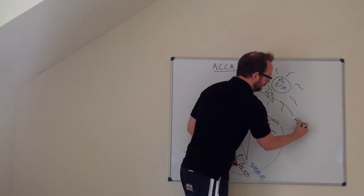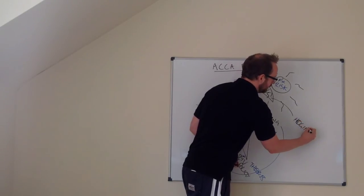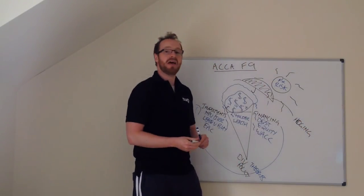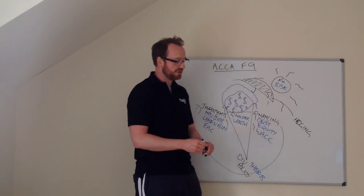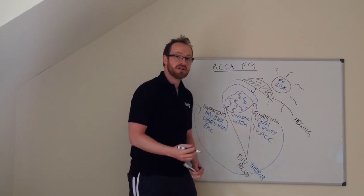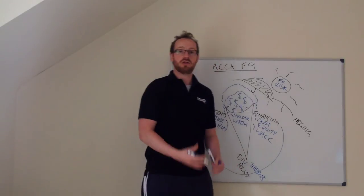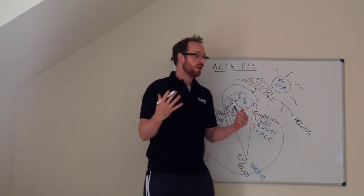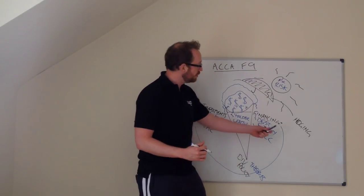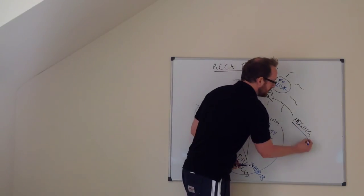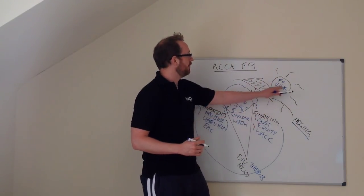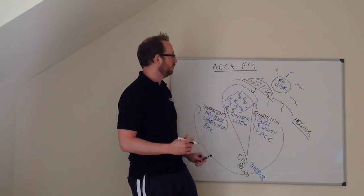What's that umbrella? Well that's hedging and we look at various methods for hedging foreign exchange risk. We look at money market hedging, forward rates, futures. We also look at options. All of those methods to hedge your risk, to reduce the risk of this reducing shareholder wealth.